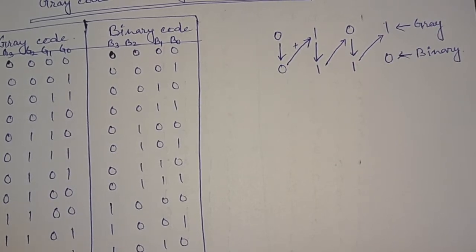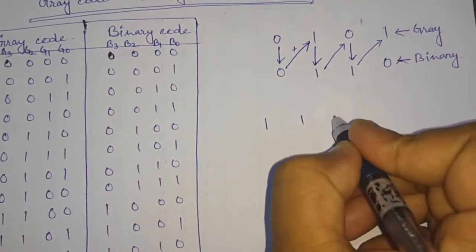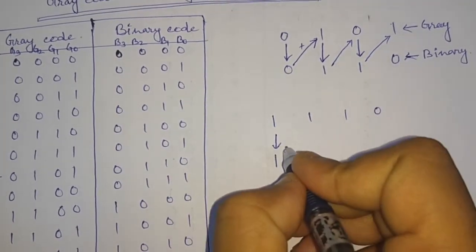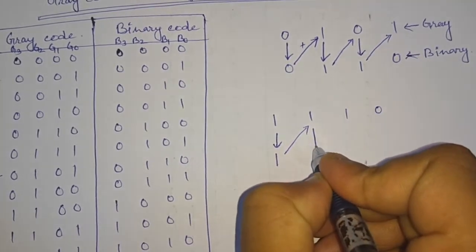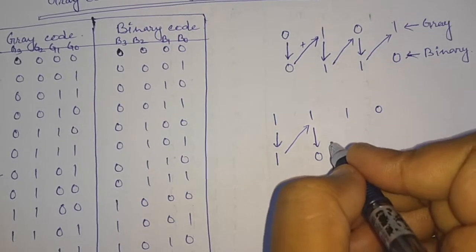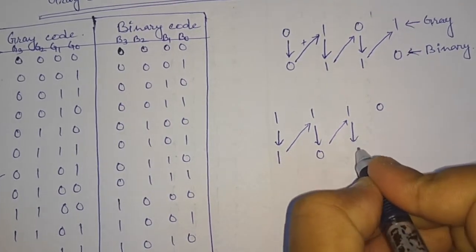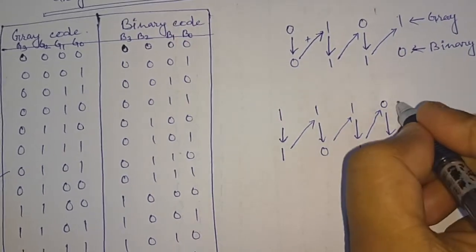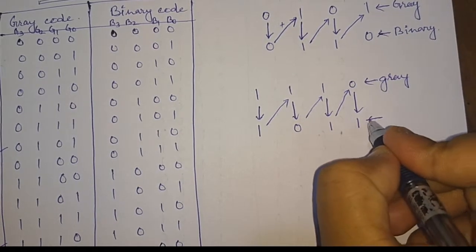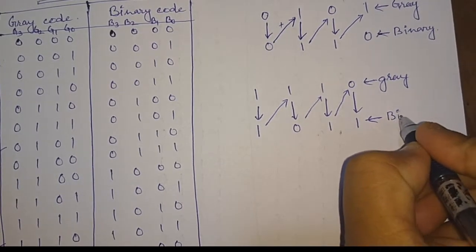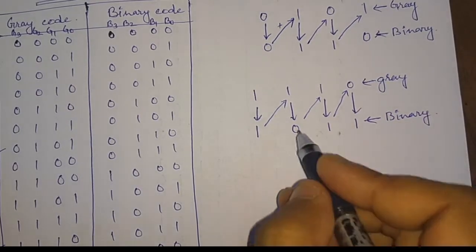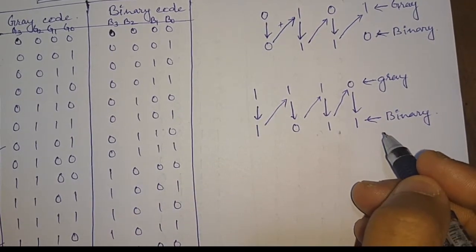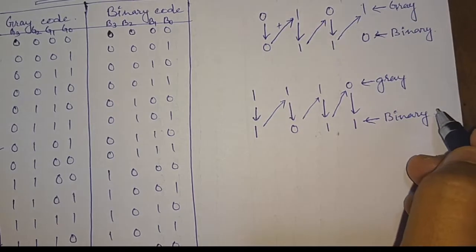For gray code 1 1 1 0, first we write the MSB as it is: 1. Then 1 plus 1 is 0, and 0 plus 1 is 1, and 1 plus 0 gives 1. So the binary code we get is 1 0 1 1. Let us verify from the truth table: for gray code 1 1 1 0 we get binary 1 0 1 1. In this way we convert gray code into its respective binary code.